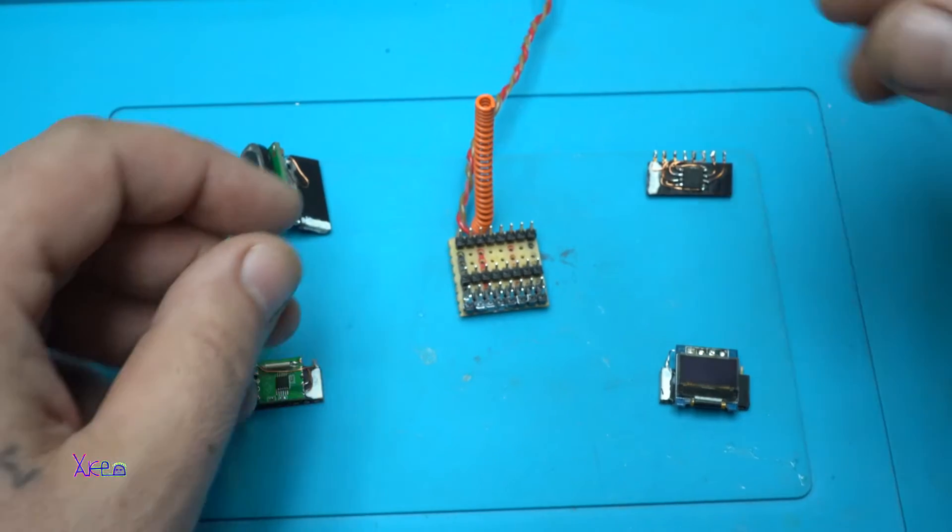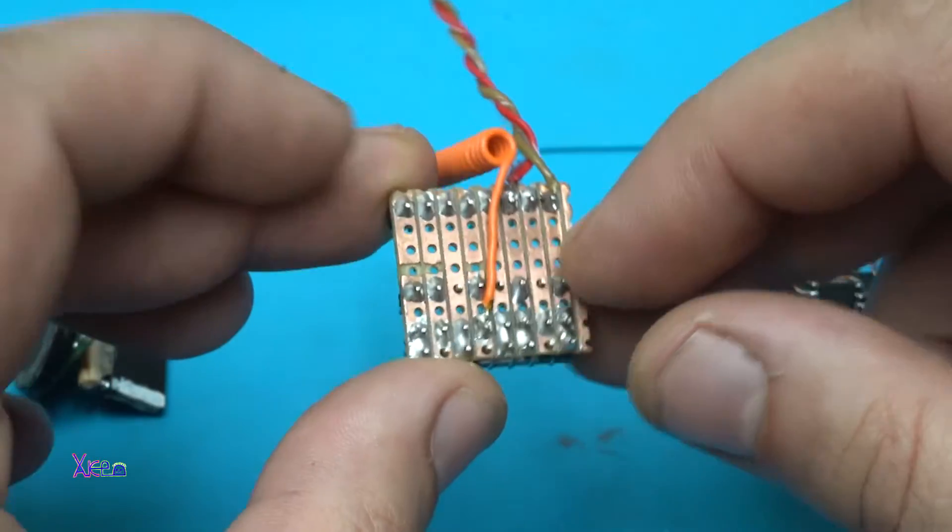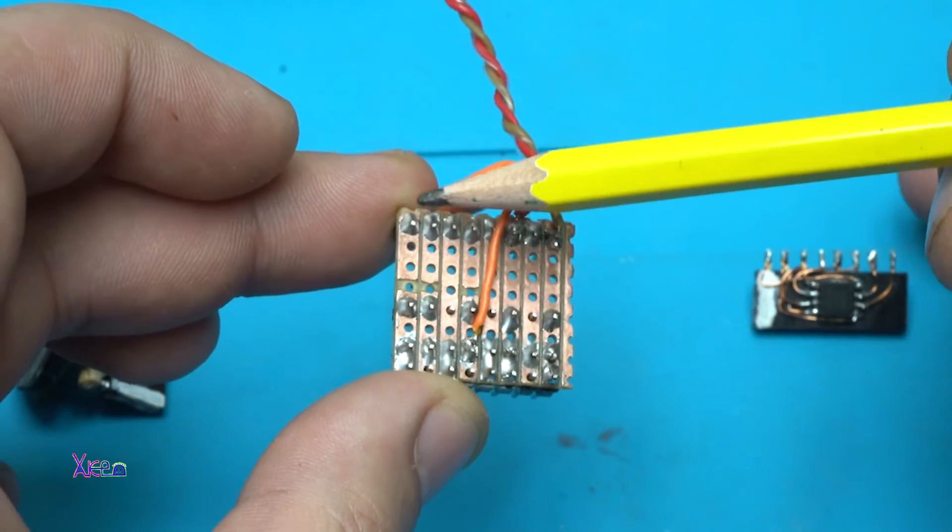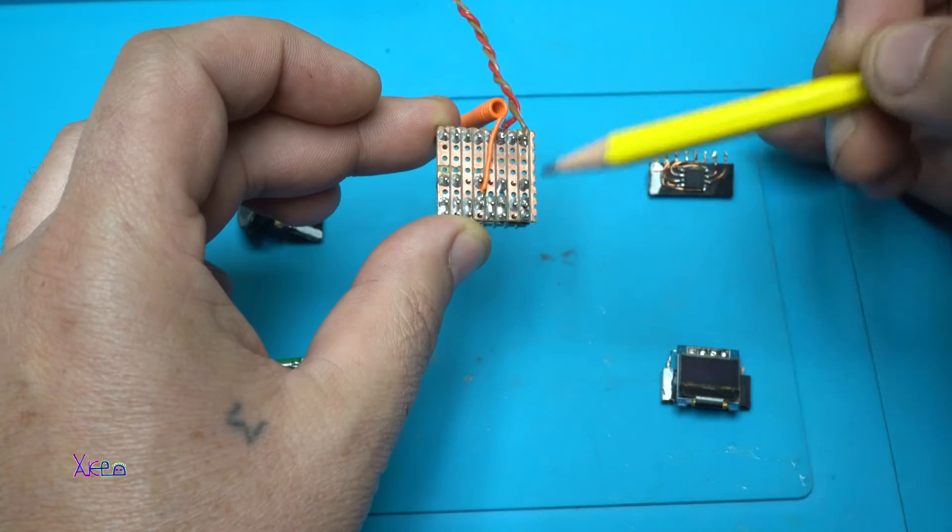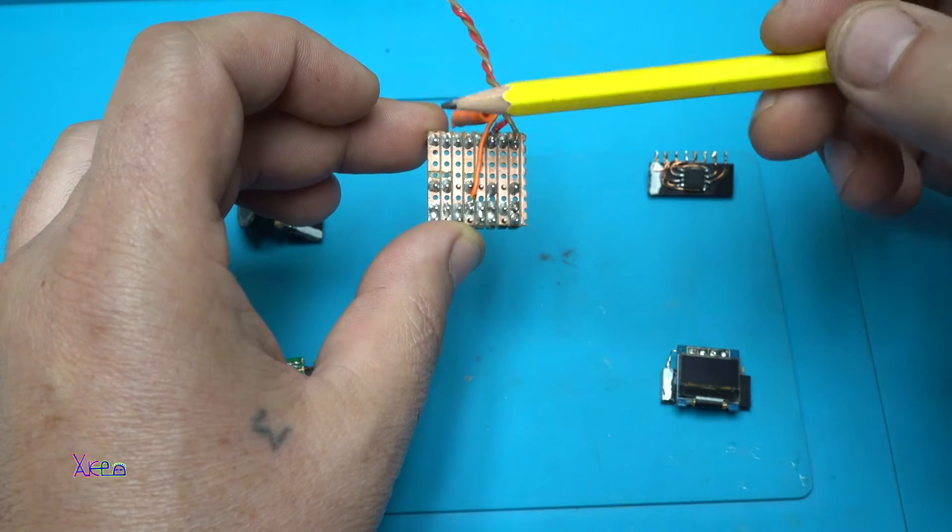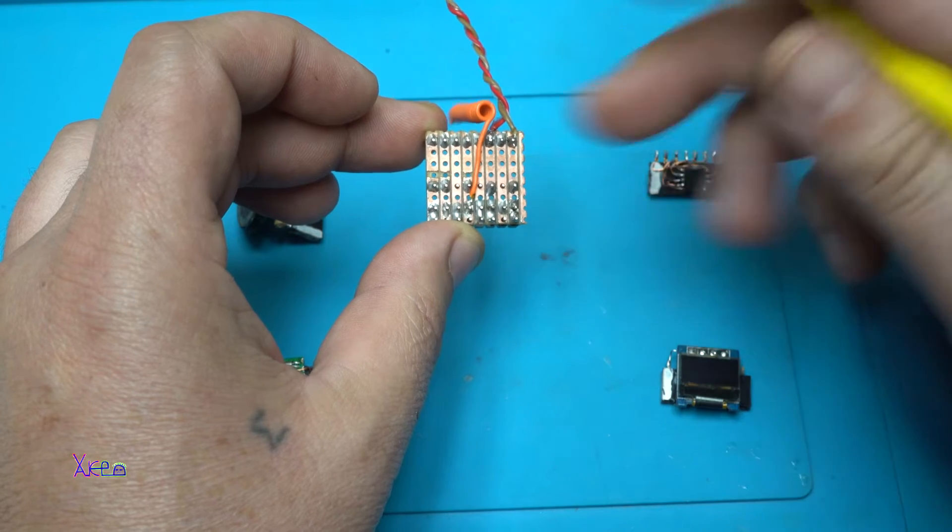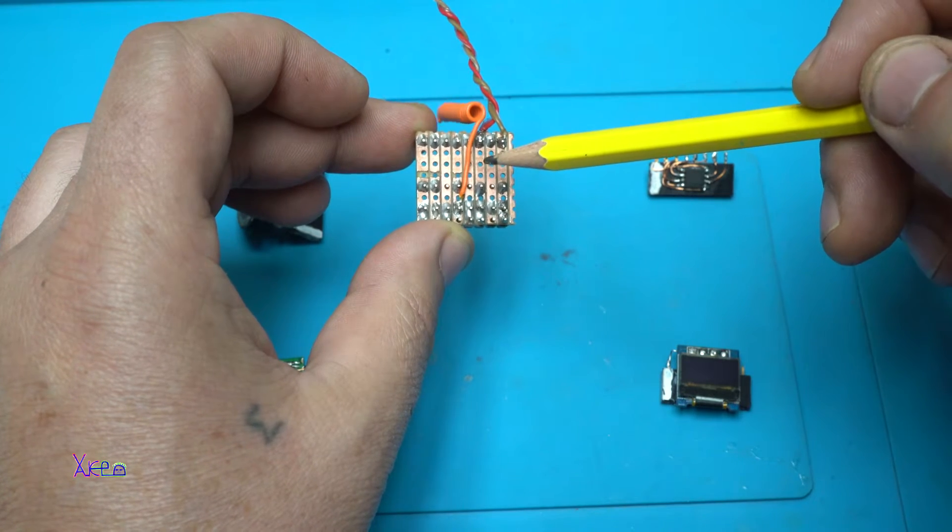So to explain some stuff, this is the main board. On the bottom you can see that I have eight rows. Each row is, for example, let's say ground positive, digital pin number one up to digital pin four.